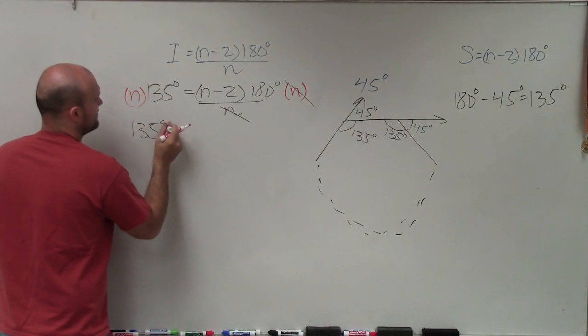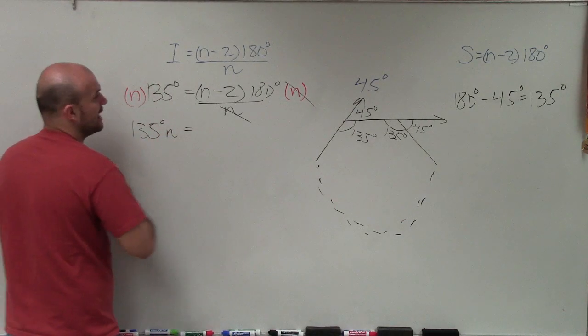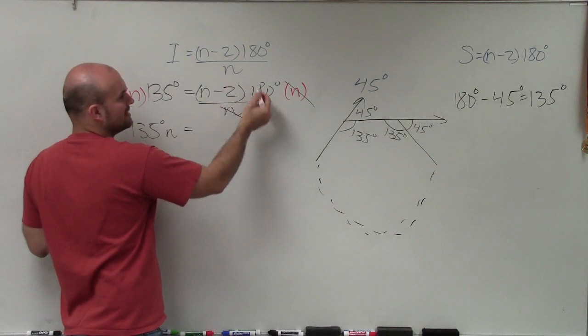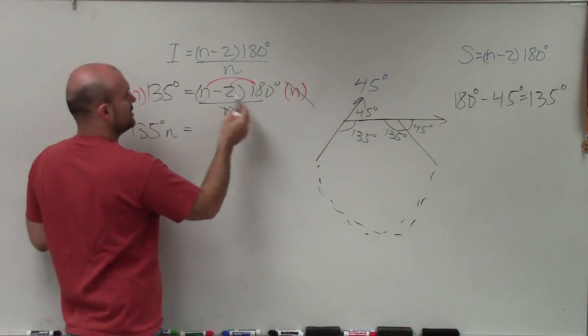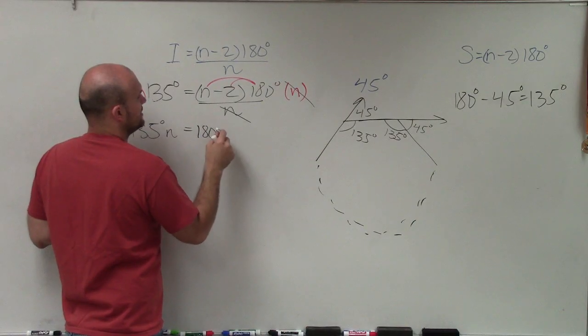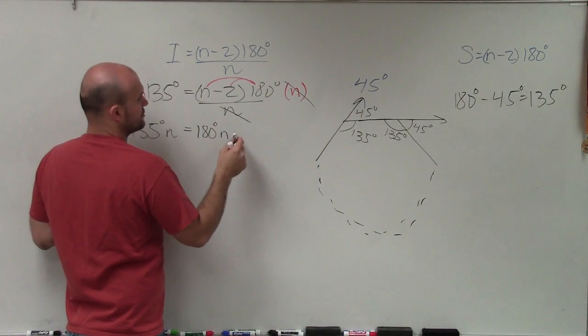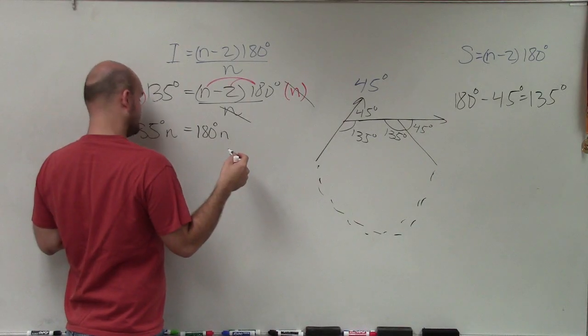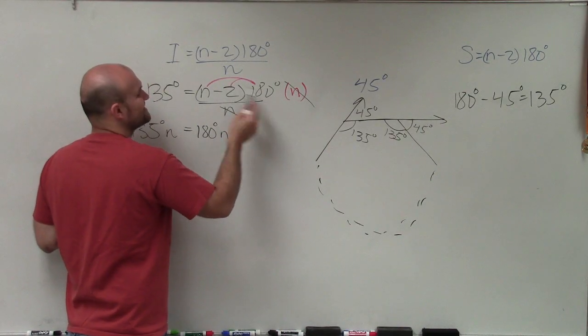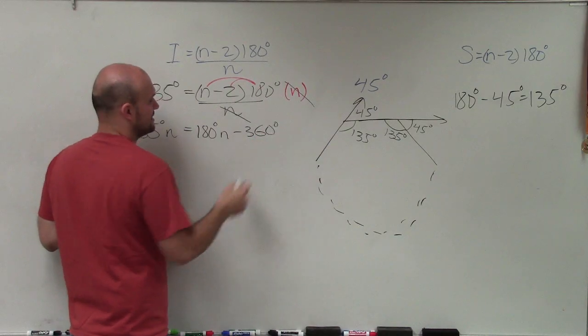I'm just left with 135 degrees n equals. Now, instead of rewriting this, I can also apply distributive property. So 180 degrees times n is 180 degrees n. And 180 degrees times negative 2 is negative 360 degrees.